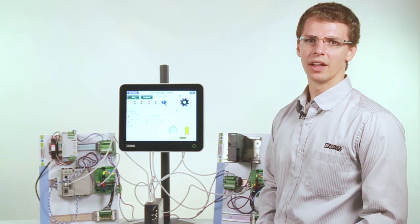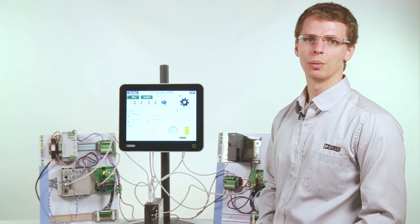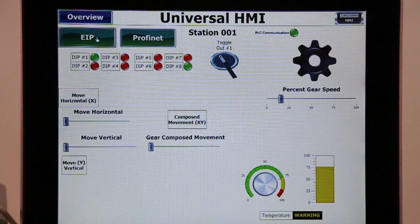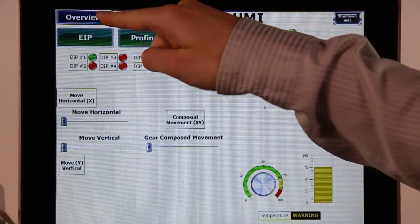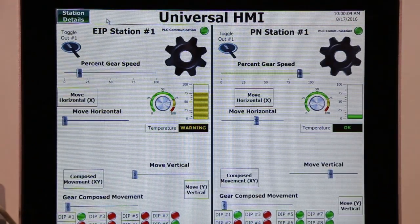To further demonstrate the functionality, let's take a look at what happens when we cut power to the different stations. In this view, we're displaying data from both Rockwell and Siemens PLCs simultaneously.